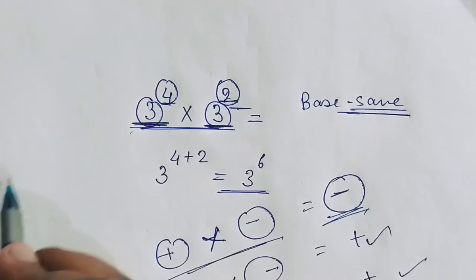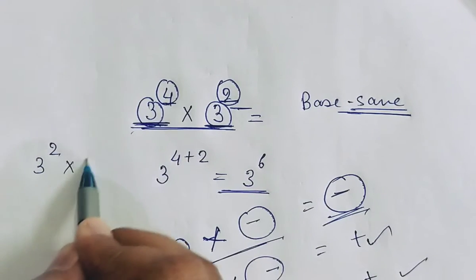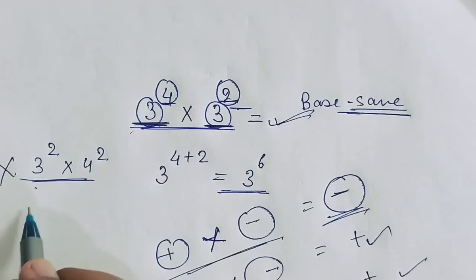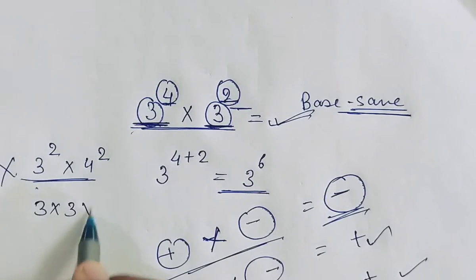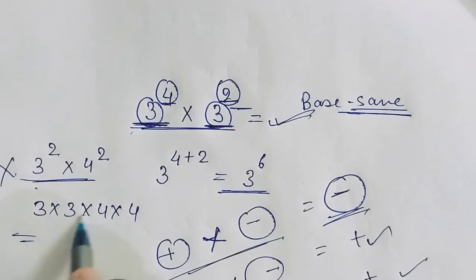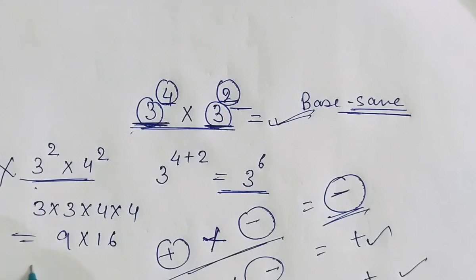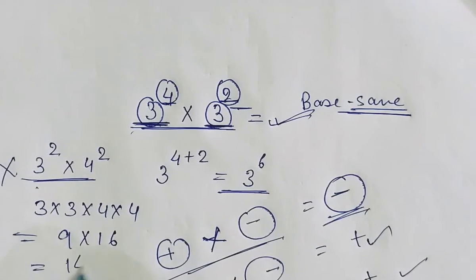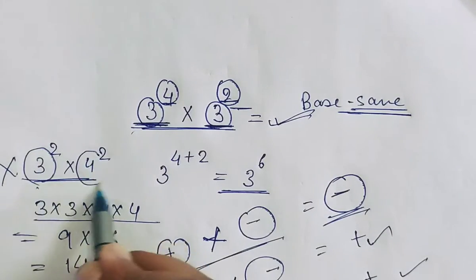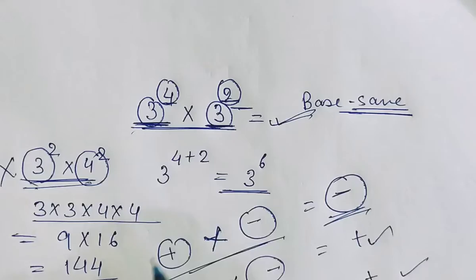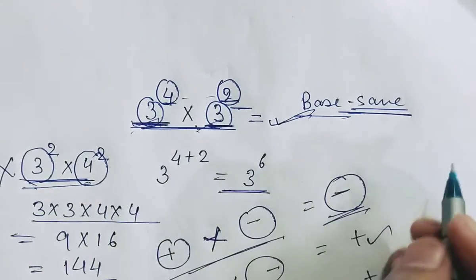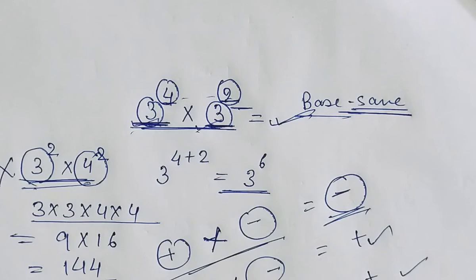But if the base is different — for example, 3 to the power 2 multiplied by 4 to the power 2 — then this law does not apply. We have to solve it as 3×3 × 4×4, giving us 9 × 16. If the base is different, we simply multiply directly. But if the base is the same, the powers are simply added. We keep these laws in mind as we proceed further with multiplication of algebraic expressions.